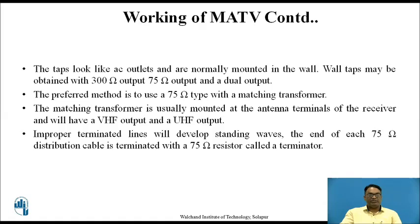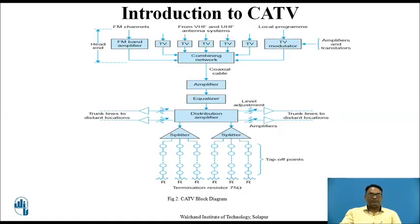The matching transformer is usually mounted at the antenna terminals of the receiver and will have a VHF output and a UHF output. Improperly terminated lines will develop a standing wave; hence, the end of each 75 ohm distribution cable is terminated with a 75 ohm resistor called a terminator to avoid the standing wave pattern. Generally, the standing wave pattern can introduce losses of information. This is all about the working of MATV.